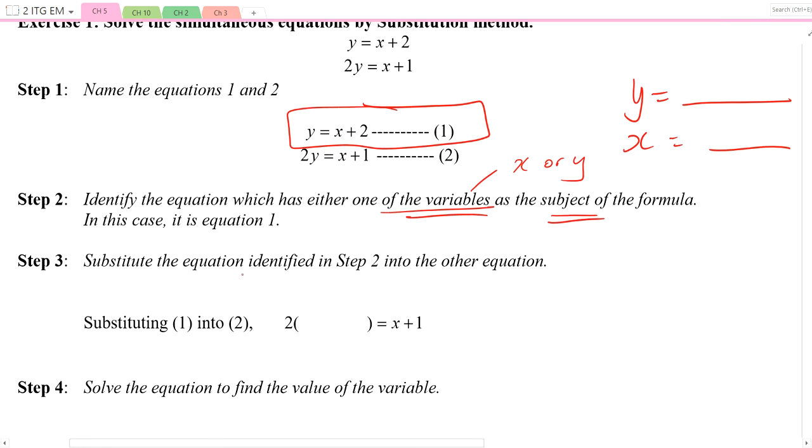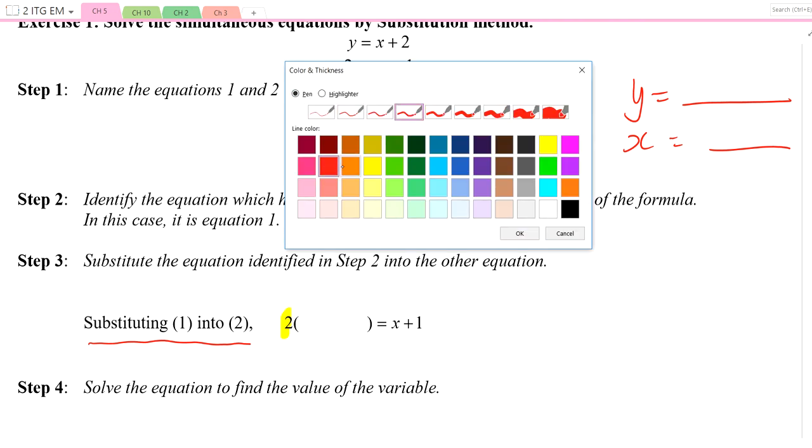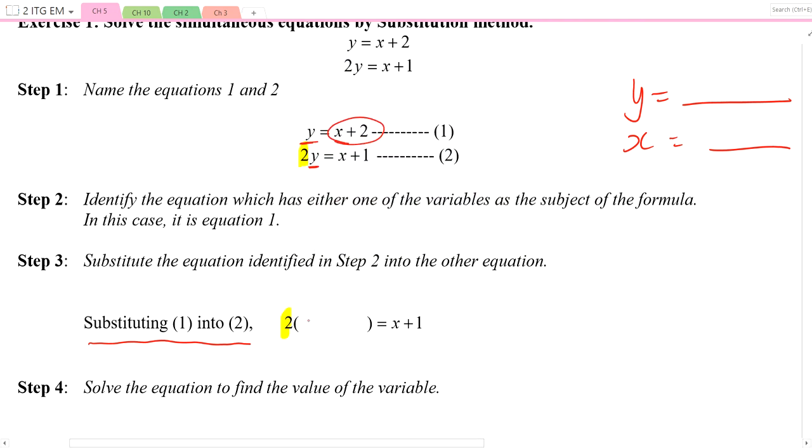We want to substitute that equation into the other equation. So we call it substituting equation 1 into equation 2. We copy down equation 2, but every time we see the variable y, we replace it with x plus 2. Copying it down, we've got 2 times y. Every time I see y, I will change it to x plus 2. So we have 2 times x plus 2 equals x plus 1.